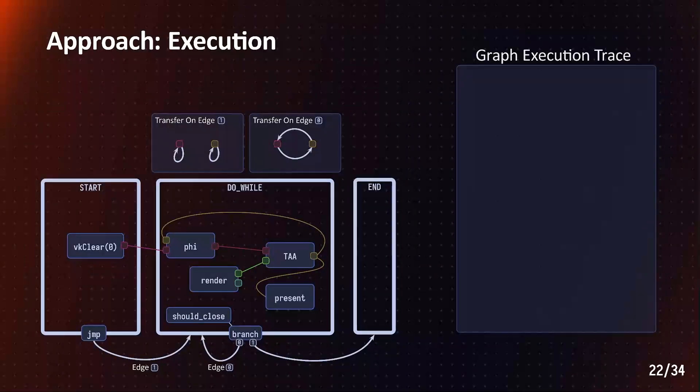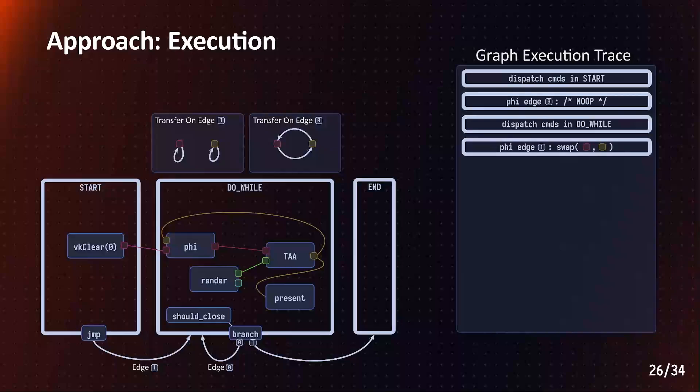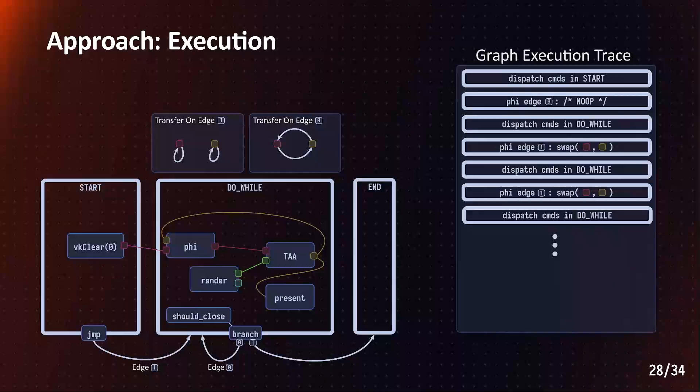These are all the mandatory planning steps, so let us walk through an example execution. We first dispatch commands in the start block. We then jump into the render loop. And on this edge, the phi only has self loops, so there's nothing to do. So we can execute the commands in the render loop. And for the second frame, in the second iteration of the render loop, we now have to transfer resources by swapping the red and the yellow resource. Before, again, dispatching the loop body. And this step will repeat until the application closes. So, notably, this approach rediscovers ping pong buffering, the code that you would write manually for temporary reuse anyways. And that's already the main result that I wanted to show today.